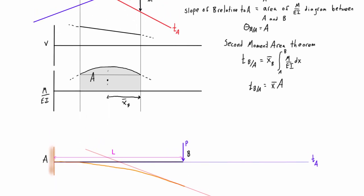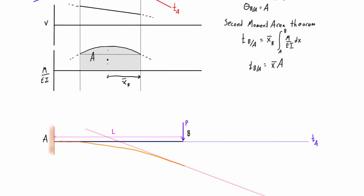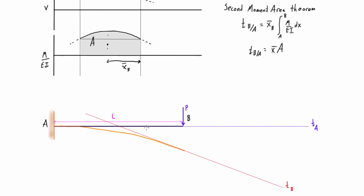If we apply the first moment area theorem, we get the angle of B relative to A — that is, theta B relative to A. Because the tangent at A is horizontal, finding the angle relative to a horizontal line gives us the actual slope at the free end. The tangent line at B lies on the deflected curve, so this relative angle is exactly the slope at the free end of the cantilever.